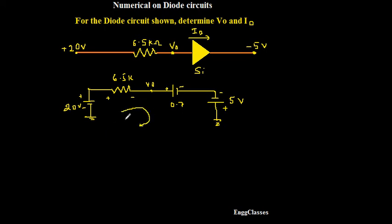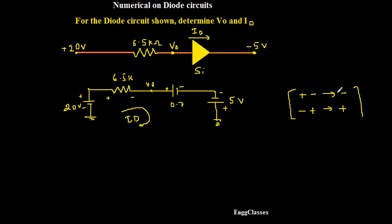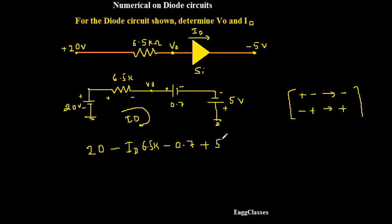If I apply KVL to this loop I can find the diode current ID. The rule is: moving from positive to negative I take the sign as negative; moving from negative to positive I take it as positive. Starting from the beginning: moving negative to positive gives plus 20 volt; then moving positive to negative gives minus ID into 6.5 kilo ohm; then positive to negative gives minus 0.7 volt; then negative to positive gives plus 5 volt. All equal to zero.